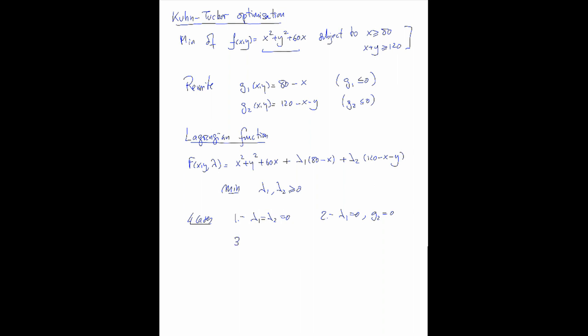Case three: g1 equals zero and lambda 2 equals zero. And case four: g1 equals g2 equals zero. We'll go case by case.